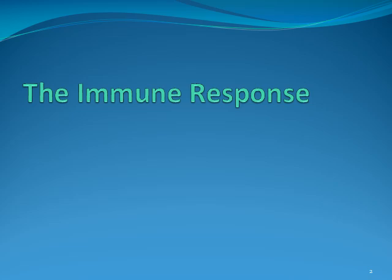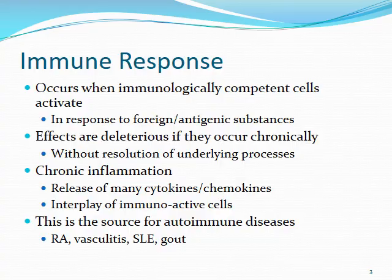The first thing we'll talk about is making sure we all have similar background on the immune response. The immune response occurs whenever immunologically competent cells are activated, typically in response to foreign or antigenic substances like foreign proteins. Acutely this can be a good process, but chronically the effects can be pretty deleterious, especially if there is no resolution of the underlying process — as seen with rheumatoid arthritis and other autoimmune disorders.